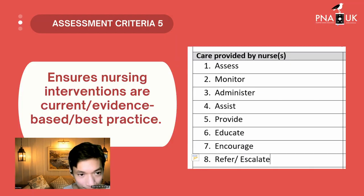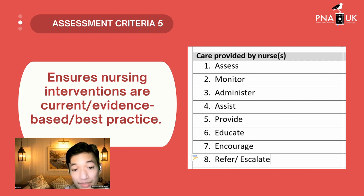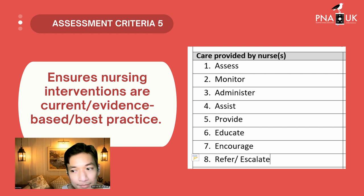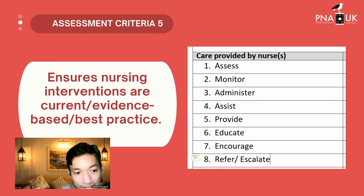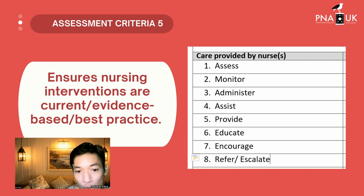The fifth criteria is probably the hardest part of your planning — writing interventions based on your problem or aims. The fifth criteria ensures nursing interventions are current, evidence-based, and best practice. For example, the tepid sponge bath (TSB) is not a common practice in the UK. If your patient has a fever, we don't normally perform TSB. Writing that as an intervention for a patient with fever may result in a fail. It should be based on current UK practice and be evidence-based.